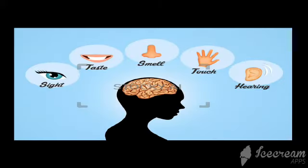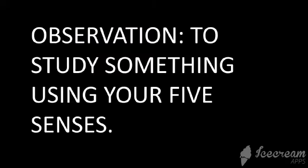For the first step, we need 5 senses: sense of sight, sense of taste, sense of smell, sense of touch, and sense of hearing. So the first step is observation, where you're going to study something using your 5 senses. You can observe things by watching their color, by watching their shapes, by touching them, and by smelling them. That's the first step.